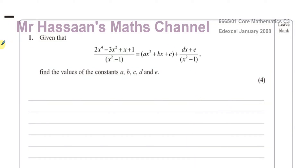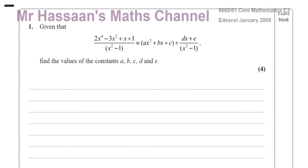Welcome to Mr. Hassan's math channel. In this question I'm going to be answering about an algebraic fraction and how to split it up from an improper fraction to a mixed number. You have a fraction which is considered improper because the numerator is of an order which is higher than the order of the denominator. If the order of the numerator is greater than or equal to the order of the denominator, it's considered an improper fraction.